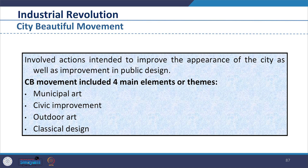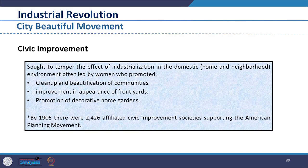The City Beautiful Movement included four main elements: Municipal Art, Civic Improvement, Outdoor Art and Classical Design. Civic Improvement sought to temper the effects of industrialization in the domestic home and neighborhood environment. This was often led by women who promoted clean-up and beautification of communities — improvement in the appearance of front yards and promotion of decorative home gardens, showing how even residential spaces were being beautified.